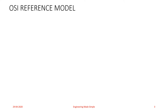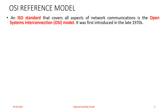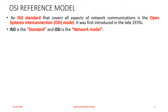OSI stands for Open System Interconnection model. An ISO standard that covers all aspects of network communication is the Open System Interconnection model. It was introduced in the late 1970s. ISO is the standard — ISO stands for International Standards Organization. This organization gives various standards regarding different networking protocols. And OSI is the network model.